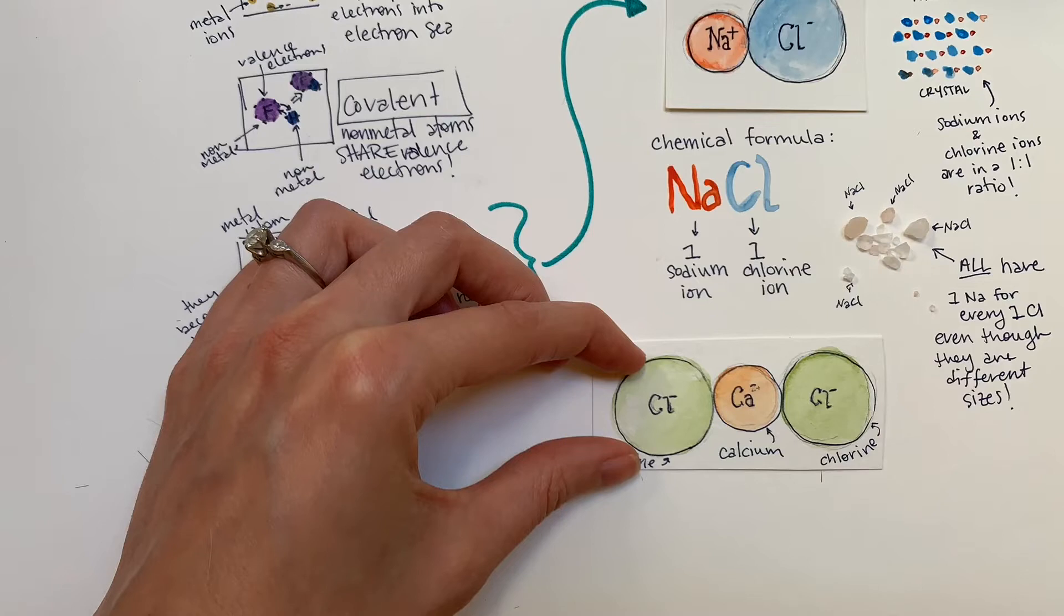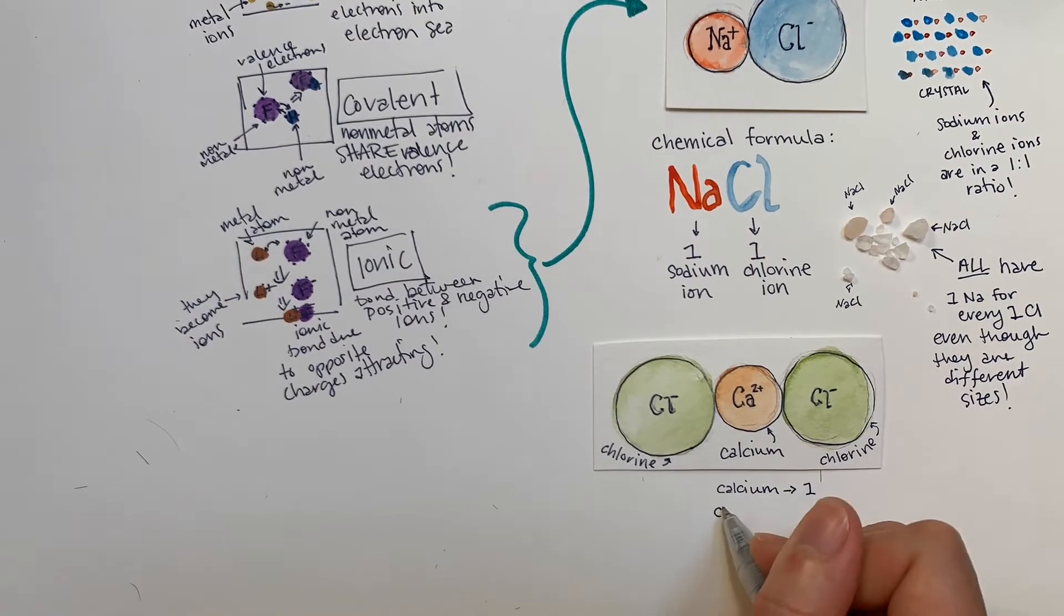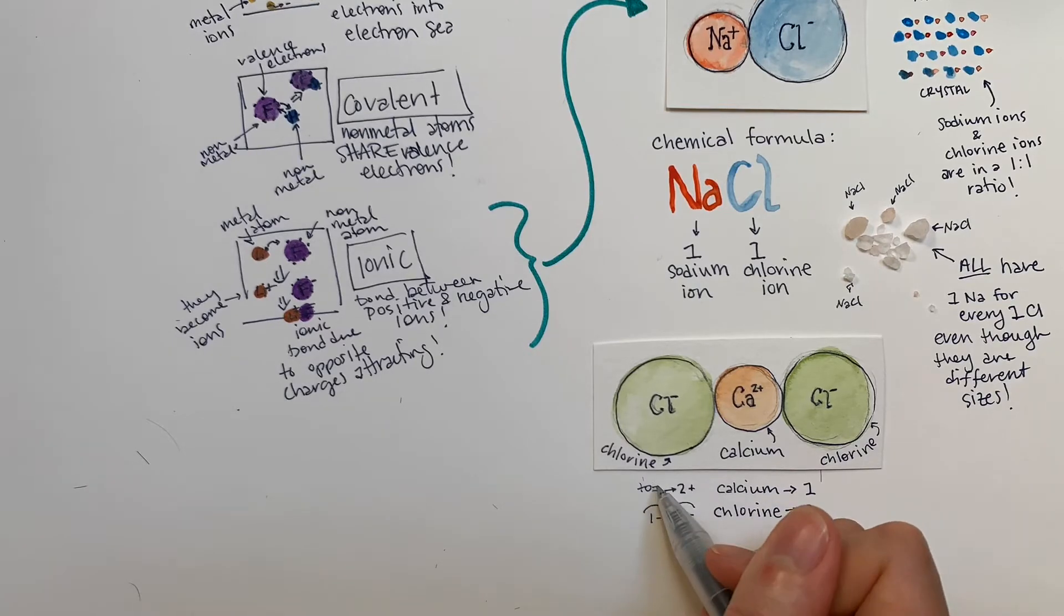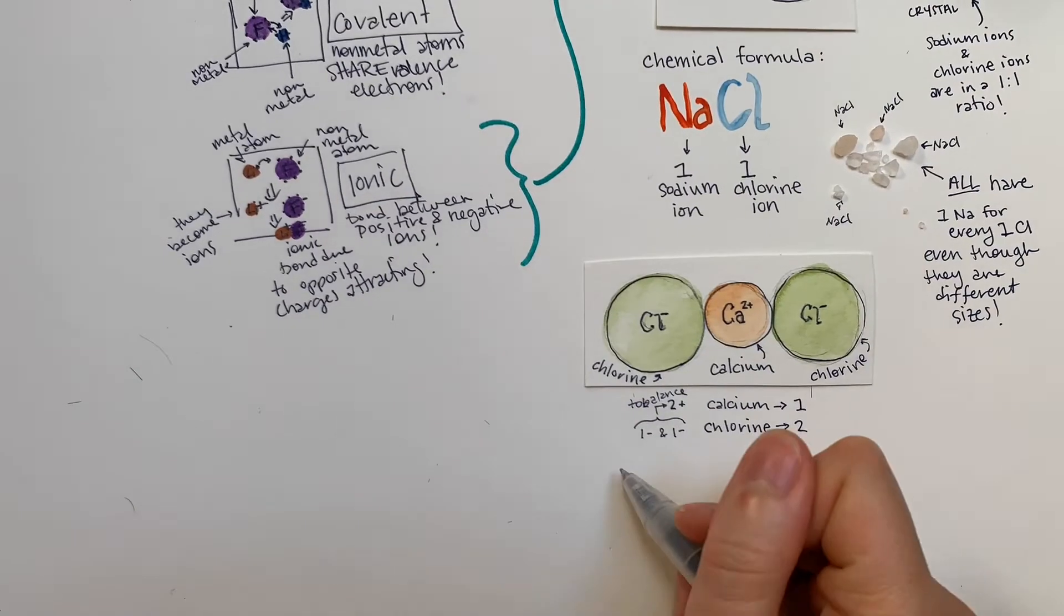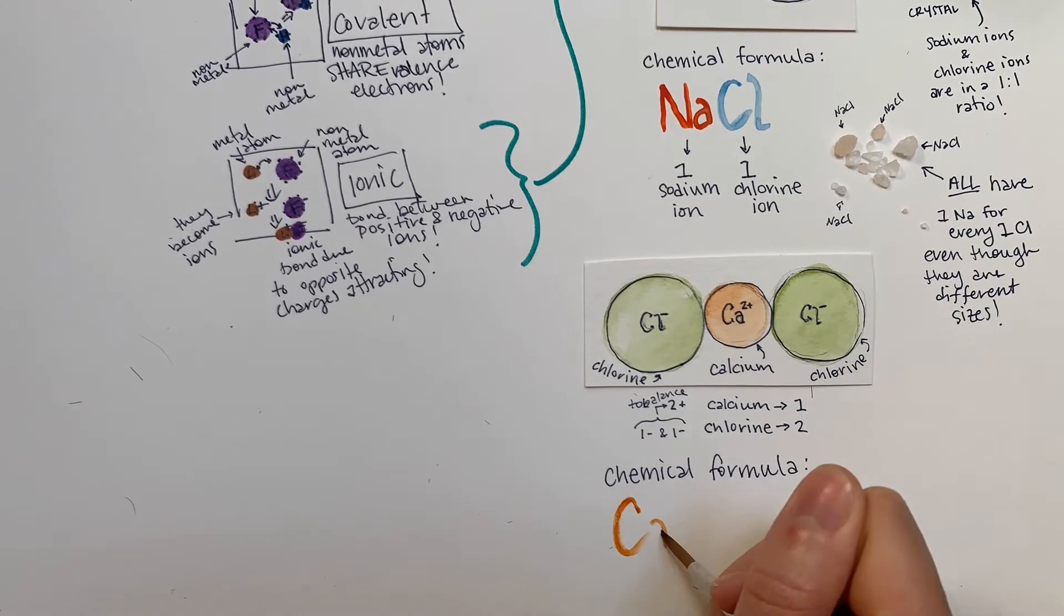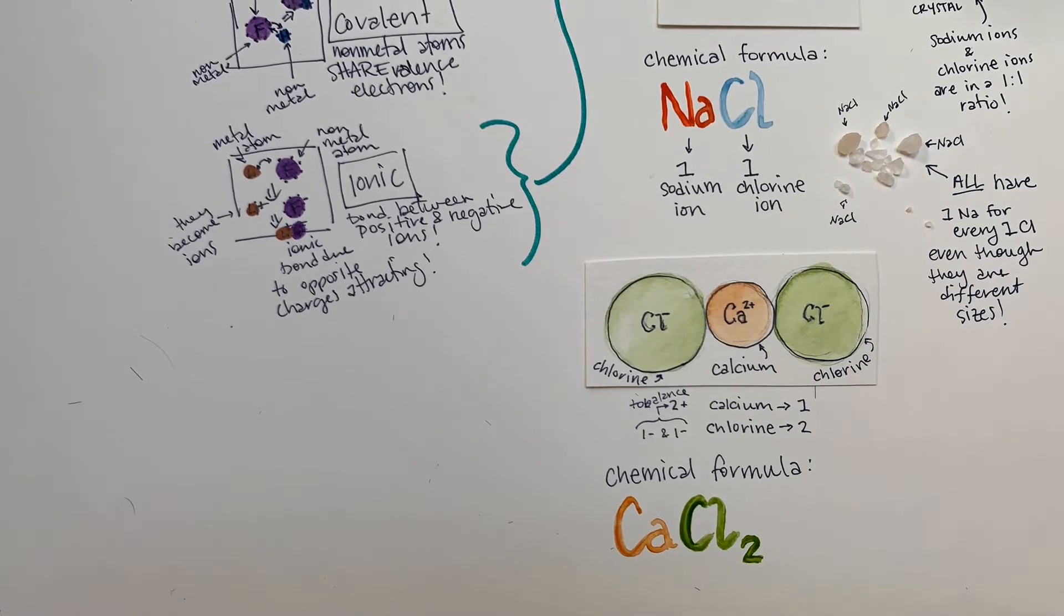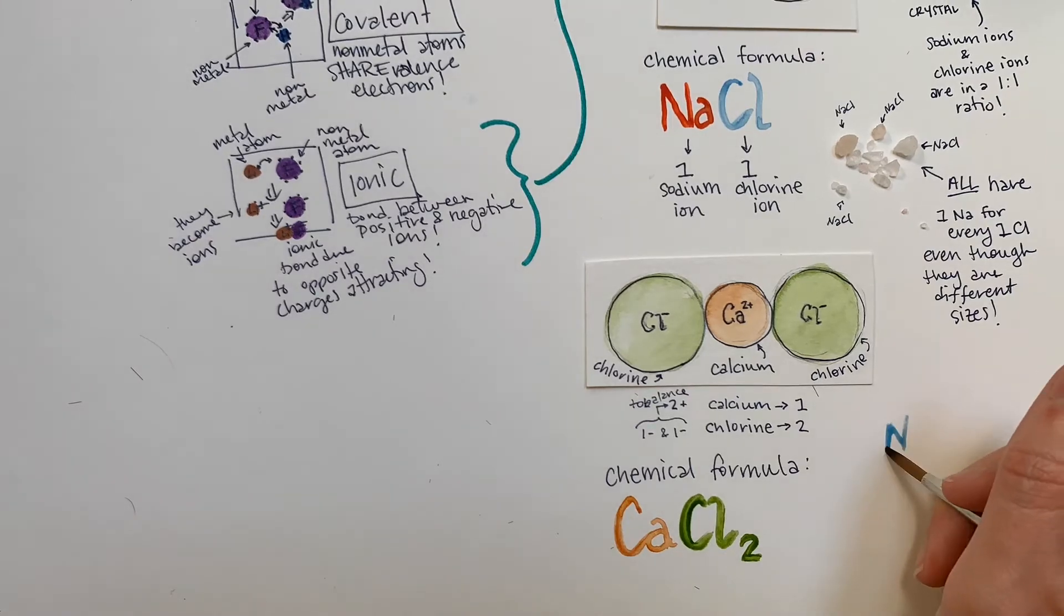If calcium and chlorine ions bonded in a one-to-one ratio, the ionic compound would still have a positive charge. Since calcium is a charge of plus two, you actually need two chlorine ions to balance out that positive charge. So an ionic compound formed between calcium and chlorine has one calcium to every two chlorine ions. To show that in a chemical formula, we write a subscript number, the little number, after the chemical symbol for chlorine, making the chemical formula for calcium chloride, CaCl2.